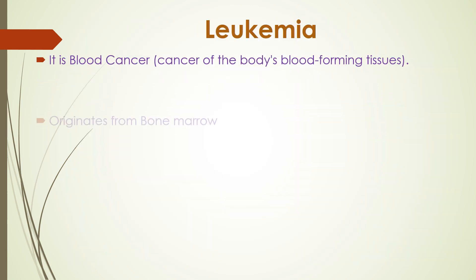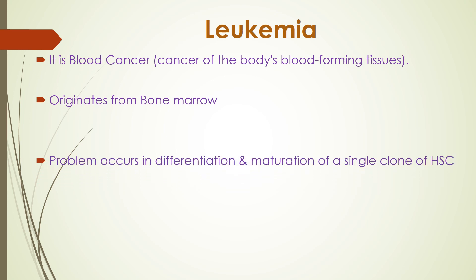Leukemia is a blood cancer — a cancer of blood-forming tissues — and in medical terms it is called leukemia. It originates from the bone marrow present in the medullary cavity of the long bones. The problem occurs in differentiation and maturation of a single clone of hematopoietic stem cell. Clones are a group of cells that produce one type of cell but are slightly different from each other. Leukemia is a clonal disorder — only one clone becomes abnormal and produces leukemia.